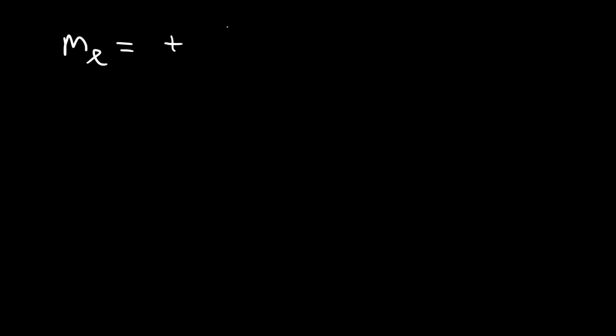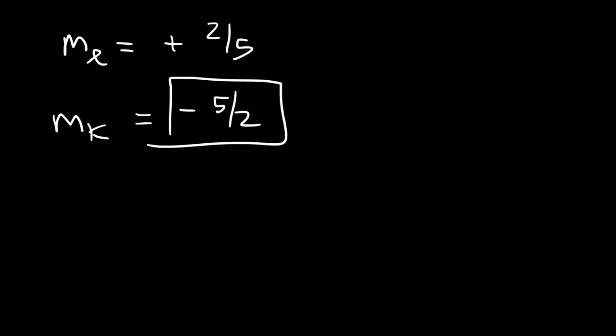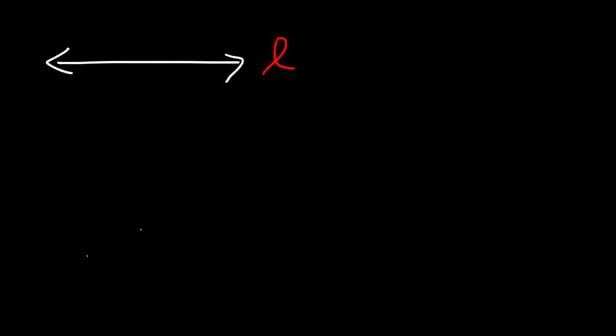For example, let's say the slope of line L is positive 2 over 5, and line K is perpendicular to L. The slope of line K is going to be negative 5 over 2. All you need to do is find the negative reciprocal, and that's going to be the slope of the perpendicular line.